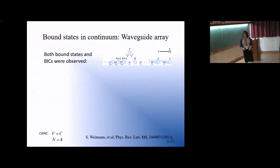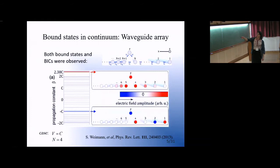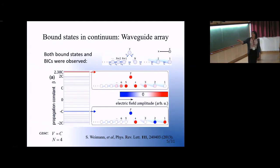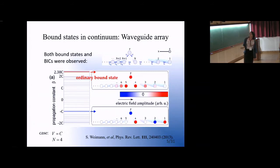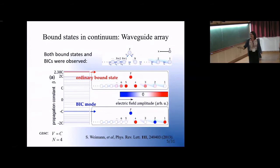In their experiment, they observed both the ordinary bound states — the exponentially localized states — as well as the bound state in continuum. There's not a true continuum because the number of waveguides is large but finite, so you have a quasi-continuum. They observe an exponentially localized bound state whose energy is outside the continuum, and also a BIC mode whose energy resides in the continuum with very specific phase information coded among the defect sites. It's because of that interference effect that it decouples from the larger array.